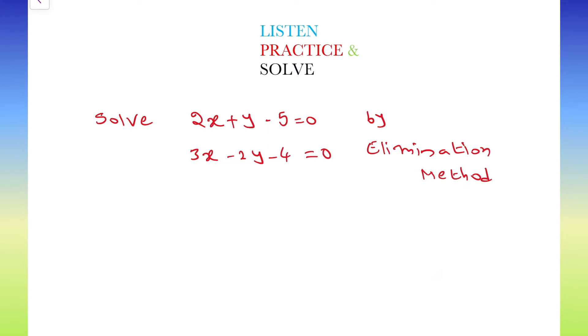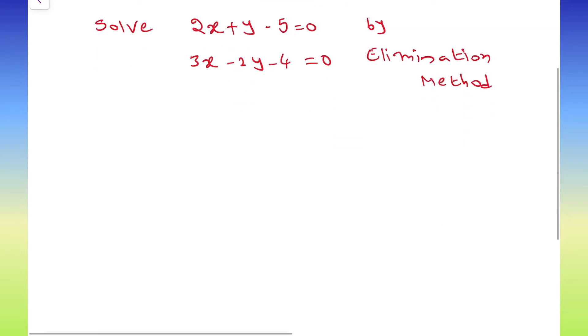If you already learned something else, then don't get confused with that one and this one. Write the two equations as it is: 2x plus y minus 5 equals to 0 and the second equation is 3x minus 2y minus 4 equals to 0.